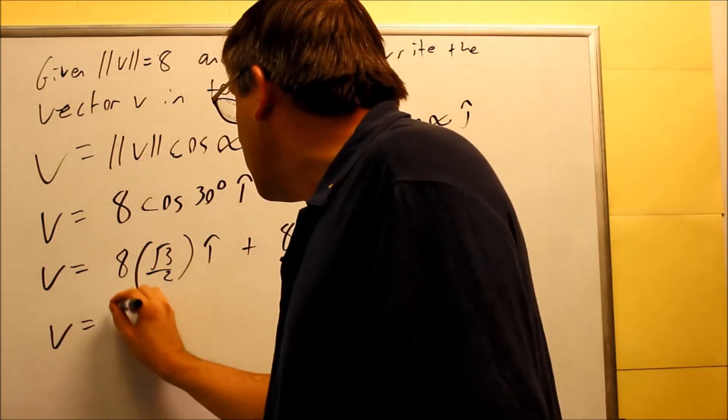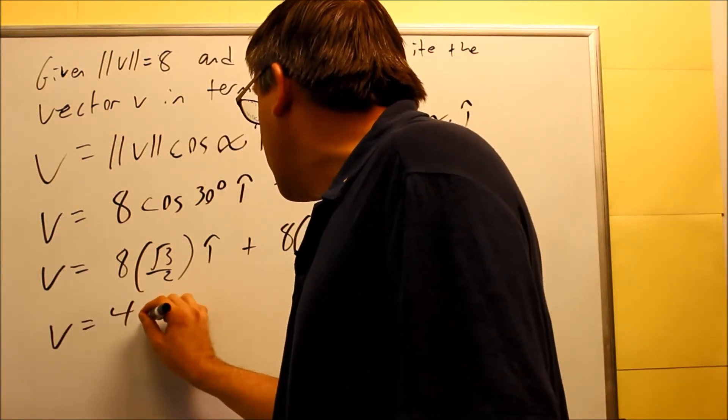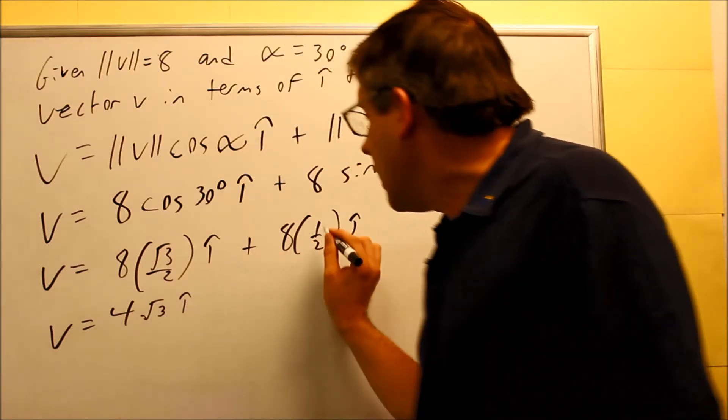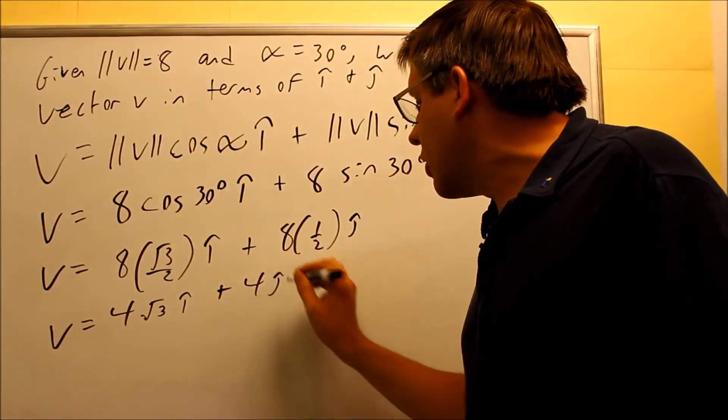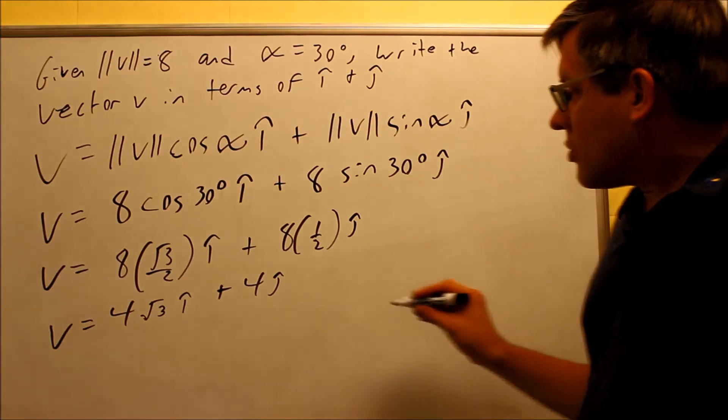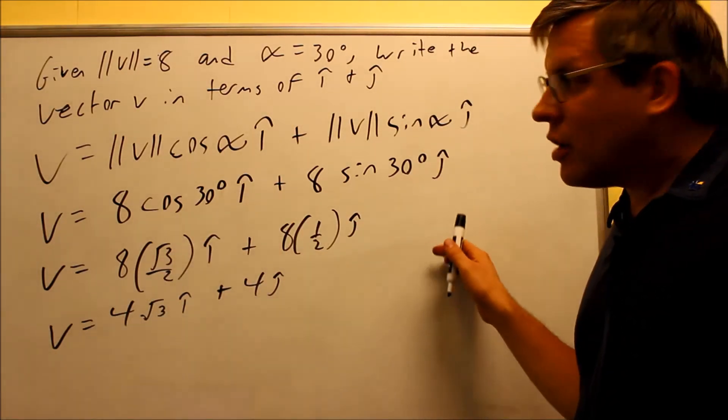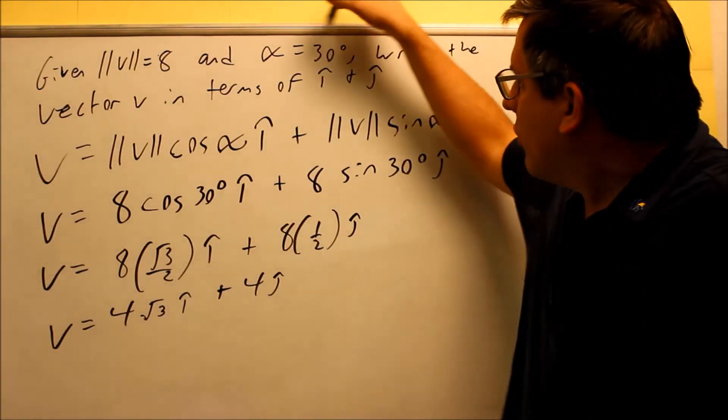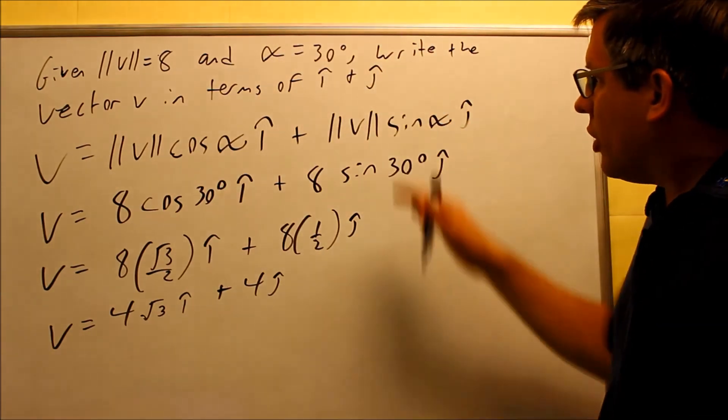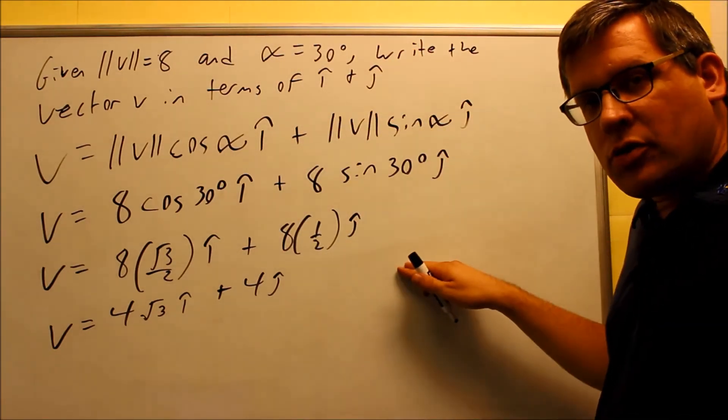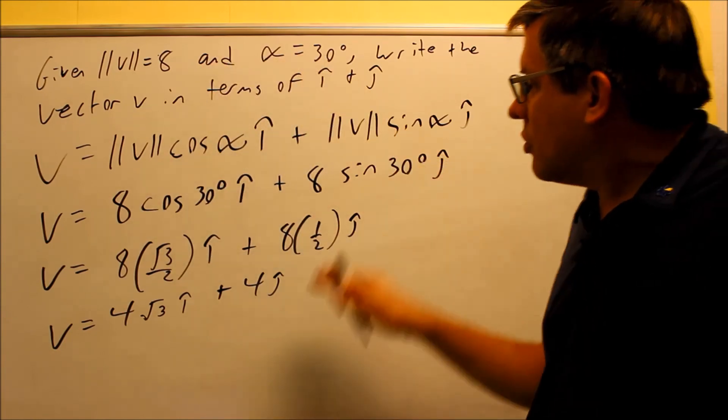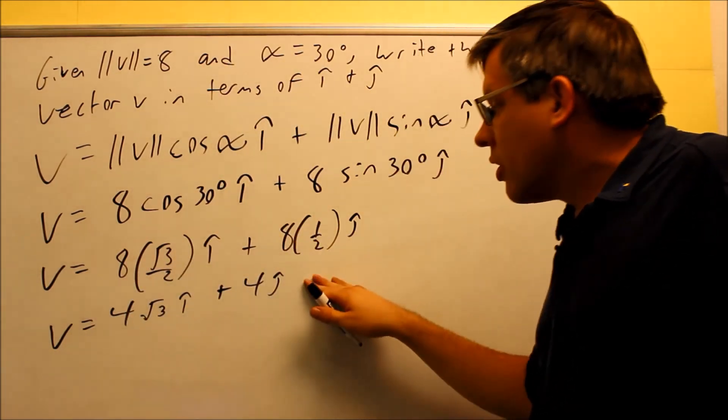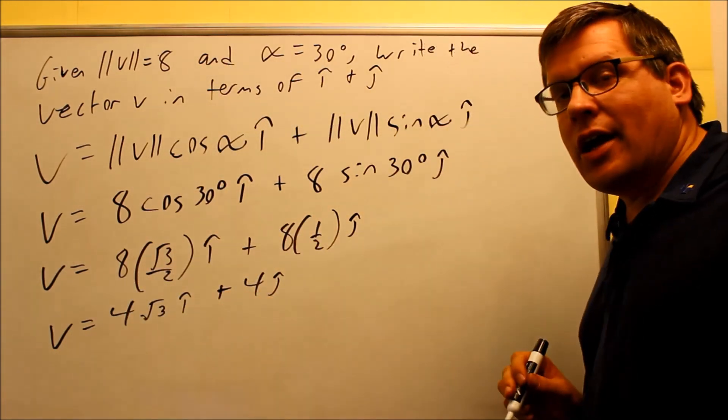And now we're just going to simplify this. We get V is equal to 4 square root of 3 I plus 4J. So this is as far as we can go. What we did was, we took this given information and we put it into the formula and we now broke it up into components. And so we're taking that information and now we're able to write it out in component form using the I and the J.